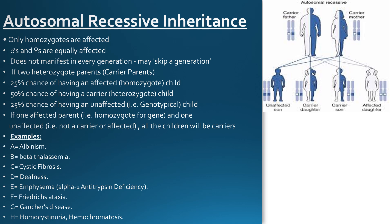In autosomal recessive inheritance, only homozygotes are affected. Both males and females are equally affected, and it may skip a generation, which means an affected parent will not necessarily produce an affected offspring. In this case, both parents are carriers, meaning they each have one mutated gene. Their offspring will be 25% unaffected, 50% carriers, and 25% affected.